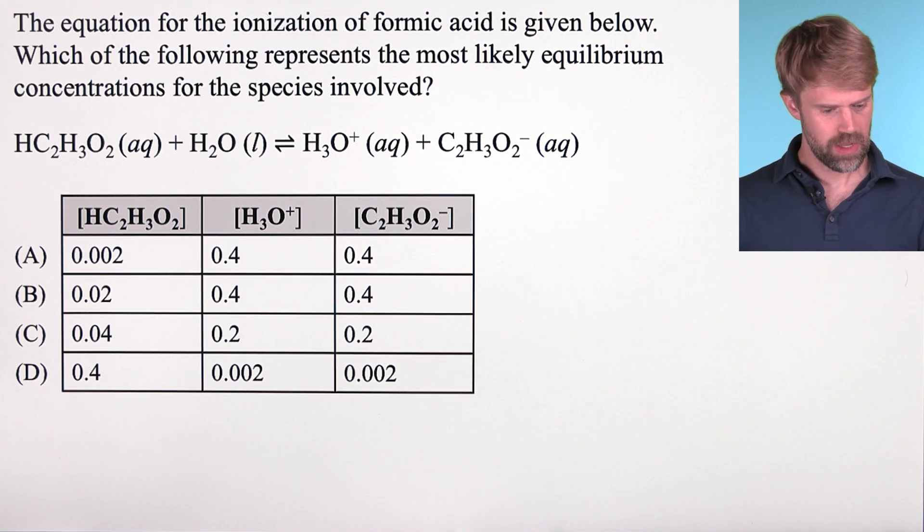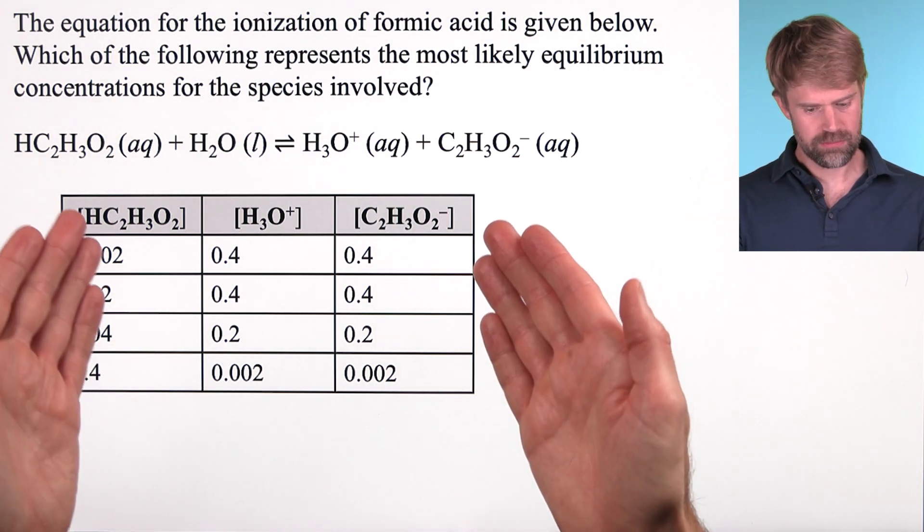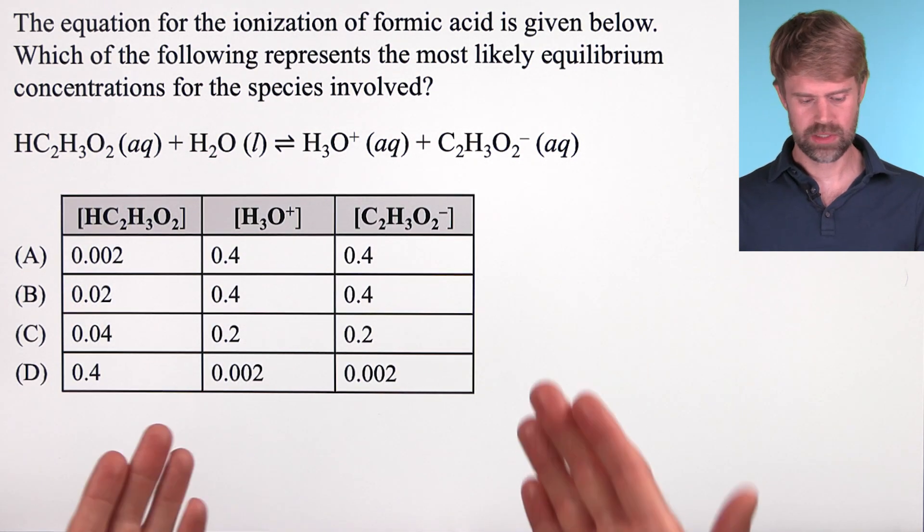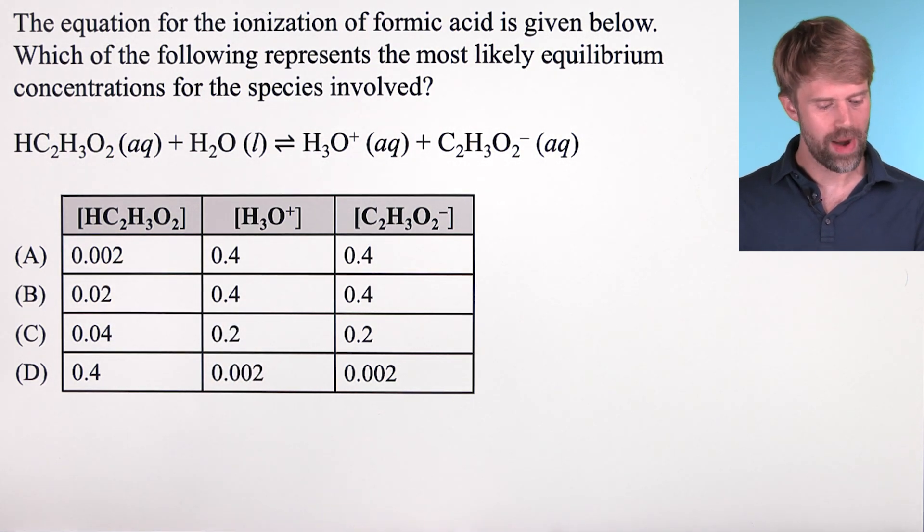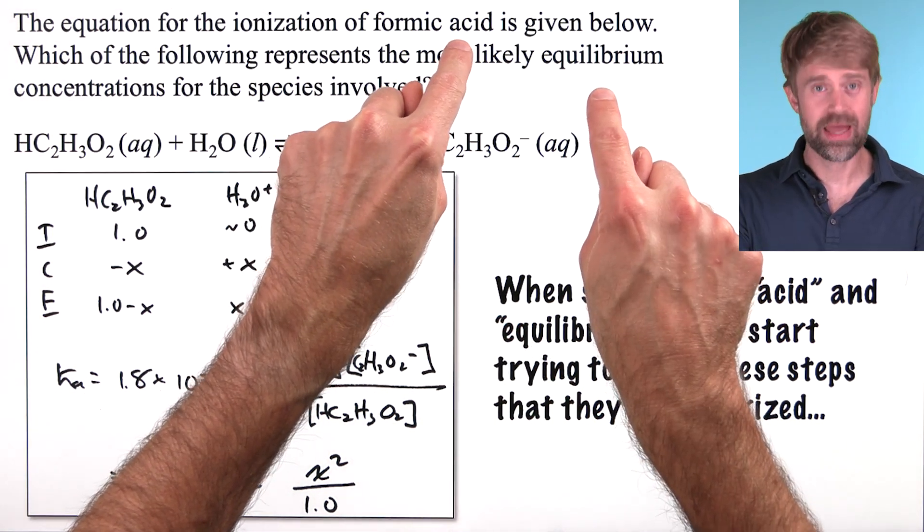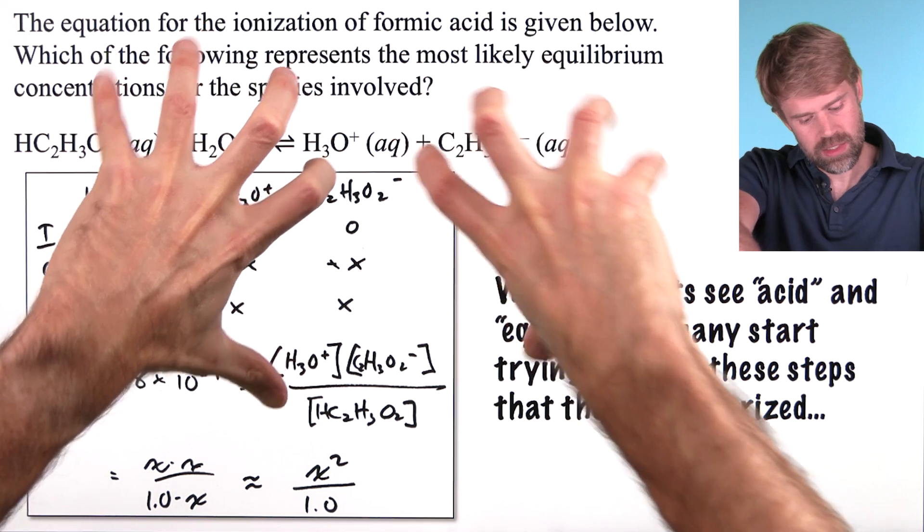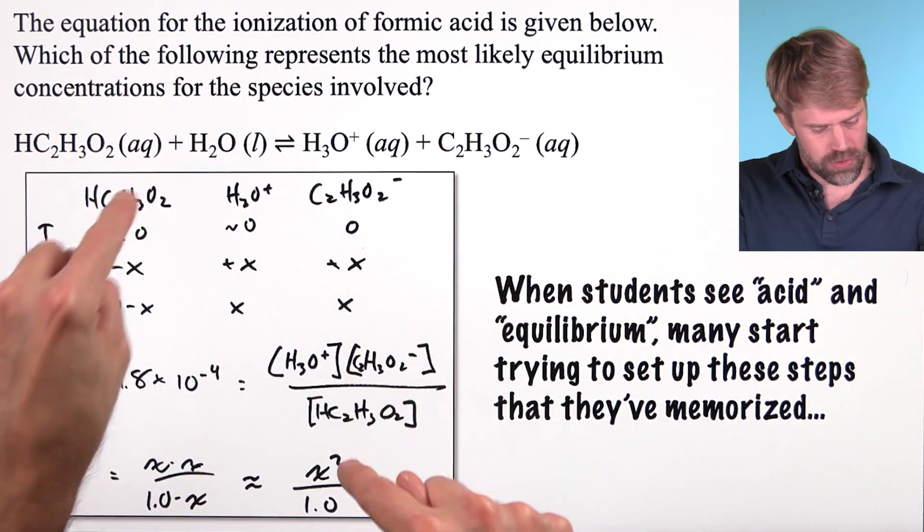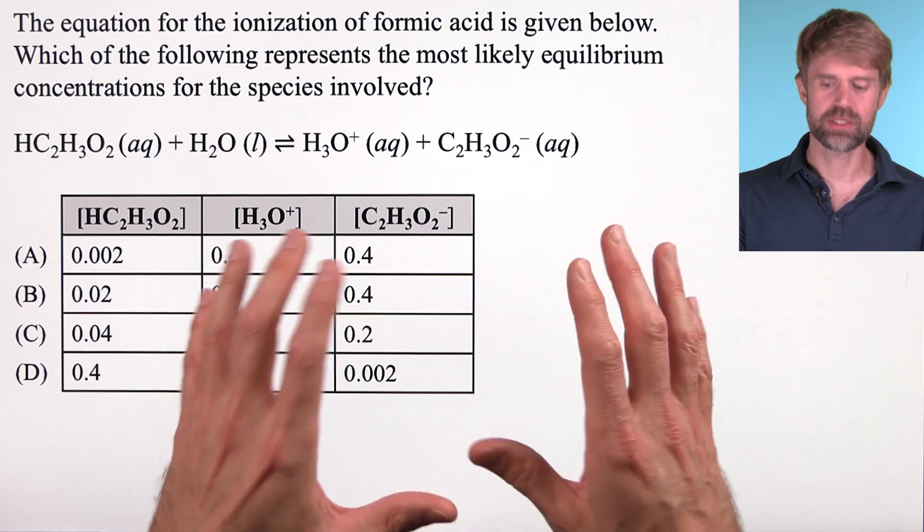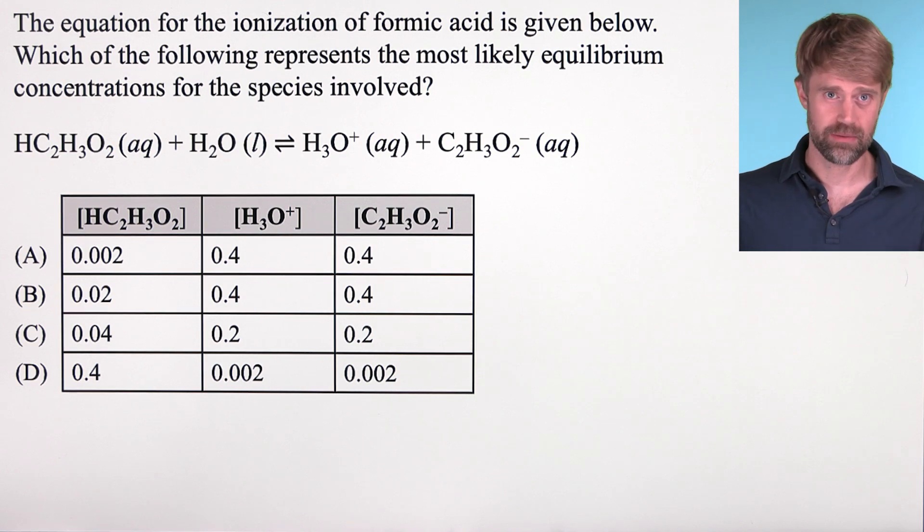Here's our second chemistry question. The equation for the ionization of formic acid is given below. Which of the following represents the most likely equilibrium concentrations for the species involved? Now, honestly, when many students see this type of question, they just freeze up. They don't even know where to begin. There's a certain type of calculation associated with acid and equilibrium and when students see these terms, many will start trying to set up these steps they've memorized and they'll try to see how they can squeeze this problem into this format or use some of these pieces to try to solve the problem. But if you understand the underlying concepts, you can take a step back and see that it's actually really straightforward and you might not even have to do any math. There's a shortcut.